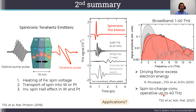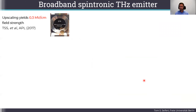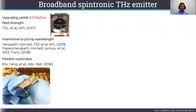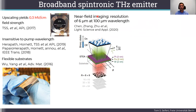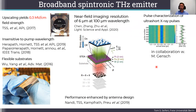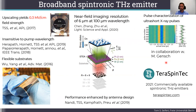Now we have understood it — so are there applications of the spintronic terahertz emitter? Yes. First, if you upscale these devices — which is easily possible — you can get very high terahertz electric fields. Second, it is very insensitive to the pump wavelength, because it is simply a fast heating of the electrons. You can also grow these emitters on flexible substrates. A very recent study found they can be used for near-field imaging with deep sub-wavelength resolution. You can even enhance performance through antenna design. In a very recent collaboration, we showed they can be used as a very fast photodiode to characterize x-ray pulses from large-scale facilities. Lastly, these emitters have also become commercially available — please visit teraspintec.com.